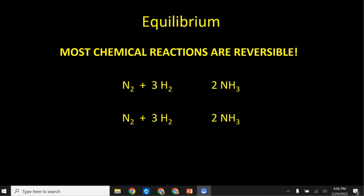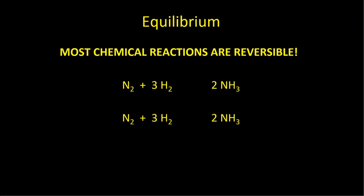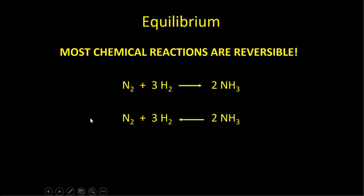Many chemical reactions are reversible. We can see that nitrogen plus hydrogen turns into ammonia — reading that equation from left to right, we put an arrow to the right. But we can also recognize that the product, NH3, can decompose back into its elements of nitrogen and hydrogen.